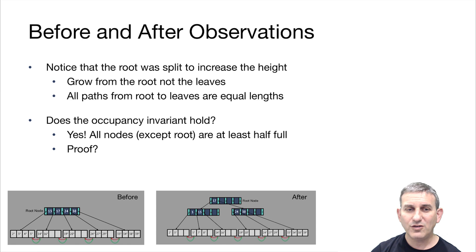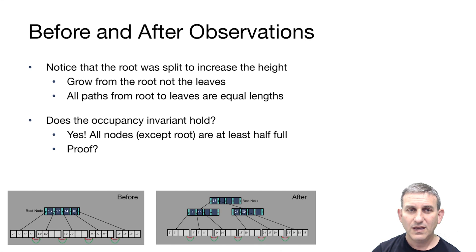At the bottom here, you can see before and after pictures for our insertion of eight in this example, and you'll notice that the root was split, which increased it from a height one tree to a height two tree. You grow the tree by splitting the root, so it grows upwards at the root, rather than growing downwards at the leaves, like a lot of in-memory trees do.